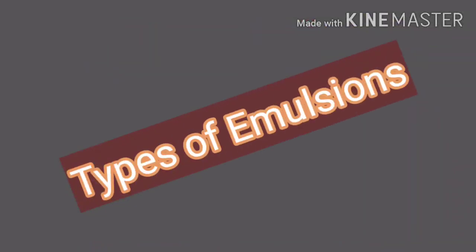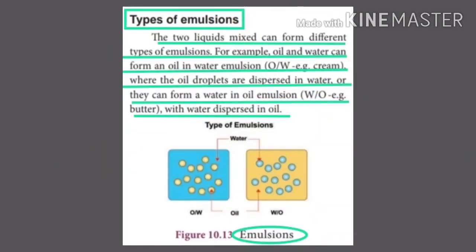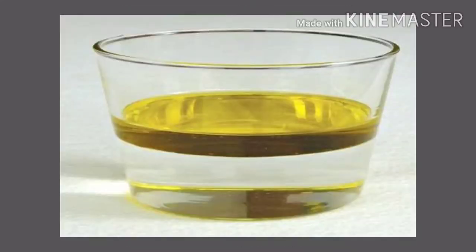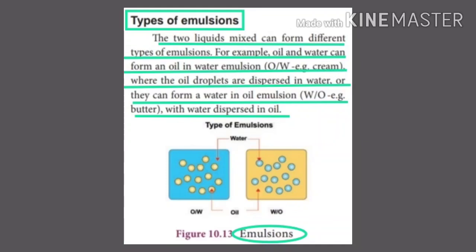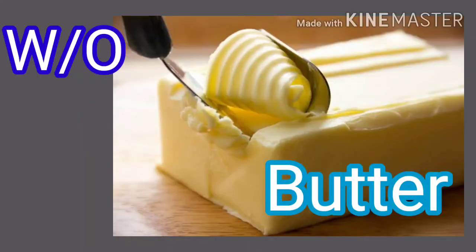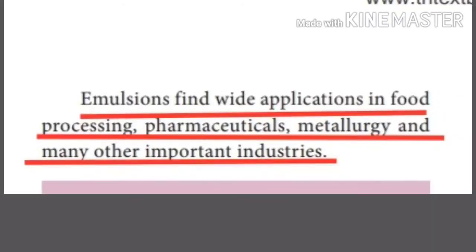Next, types of emulsions. The two liquids mixed can form different types of emulsions. For example, oil and water can form an oil-in-water emulsion — example: cream, where the oil droplets are dispersed in water. Or they can form a water-in-oil emulsion — example: butter, with water dispersed in oil. Emulsions find wide applications in food processing, pharmaceuticals, metallurgy, and many other important industries.